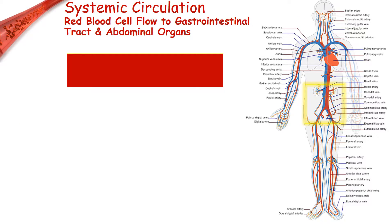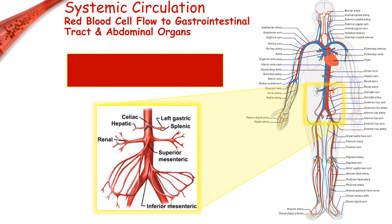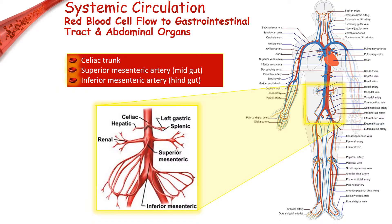Three unpaired arteries emerge from the anterior wall of the descending abdominal aorta to supply the gastrointestinal tract. From superior to inferior, these arteries are the celiac trunk, which supplies the esophagus, stomach, part of the duodenum, the liver, part of the pancreas, the spleen, and the gallbladder; the superior mesenteric artery, which supplies blood to the midgut, lower duodenum, jejunum, ileum, large intestine, and two-thirds of the transverse colon; and the inferior mesenteric artery, which supplies the hindgut, the distal one-third of the transverse colon, the descending colon, the sigmoid colon, and the rectum.